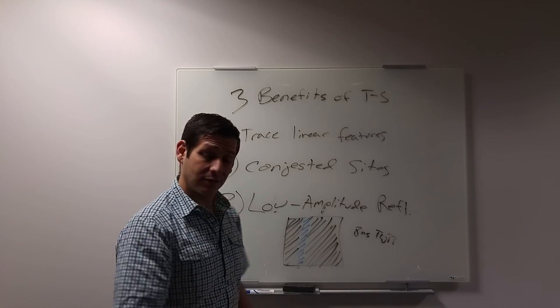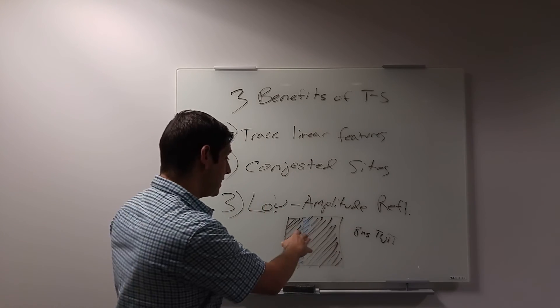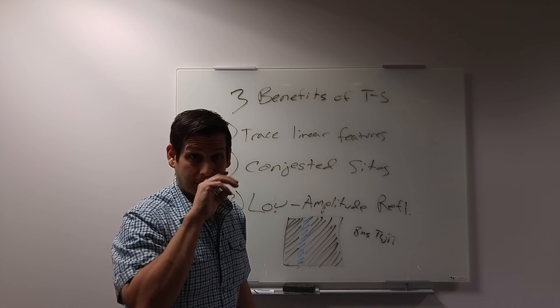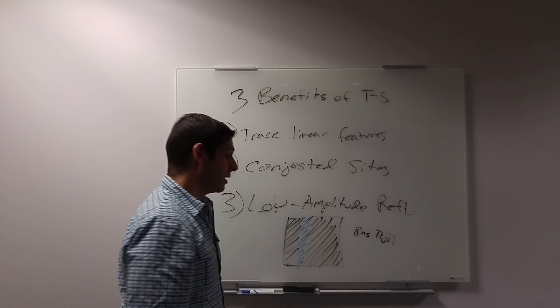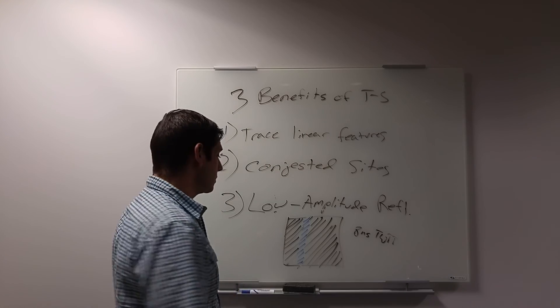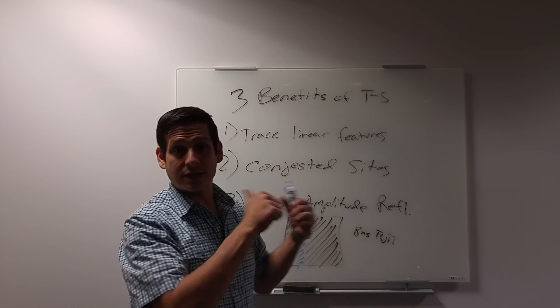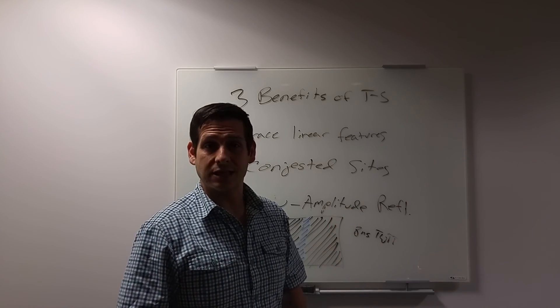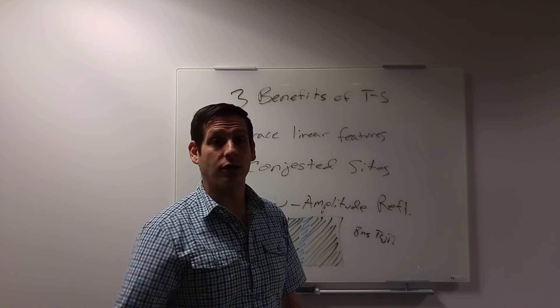Furthermore, you might not be able to see the bottom of the trench or your pipe. And so seeing eight nanoseconds of two-way travel time without a signal, with the signal not being attenuated yet could help you see it if you can't see it in the profile view. So three benefits. I hope that this was helpful. Leave a comment below of another benefit, another way that you can use time slices to enhance your project. I would love to hear your comments.